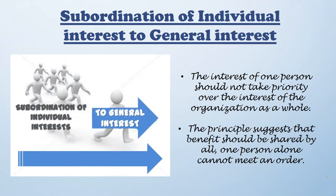Subordination of individual interest to general interest — this principle states that it is the function of management to reconcile the interest of individuals with those of the group. If there are any differences in their interests, management's function should be to reconcile them. If your workers are motivated, they can perform well. For example, if you are appraising only the manager but not remunerating or motivating the subordinates working on a project, they will obviously feel demotivated.